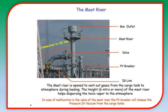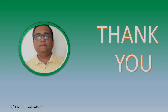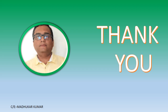The mast riser is an additional exit point from which gas exits the system. Guard rails are provided so personnel can access it safely, along with valve arrangements and the PV breaker on the IG main line. The mast riser is open to vent gases from the cargo tank to the atmosphere during loading. Its height is approximately 6 meters, helping to disperse toxic vapors to the atmosphere. In case of valve malfunction, the PV breaker will release pressure or vacuum from the cargo tanks.